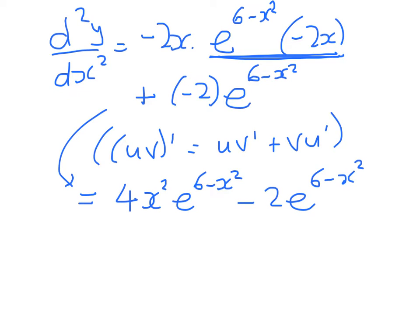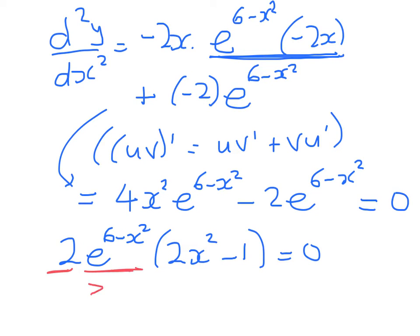Now we need to clean that up a bit. So all of that equals 4x squared e to the 6 minus x squared minus 2 e to the 6 minus x squared. Remember, our goal is to solve that equation equaling 0. We can factorize and we can take out 2 e to the 6 minus x squared times 2x squared minus 1 equals 0. Let's take a look at this. That's always strictly positive, never hit 0. So we're really just down to solving 2x squared minus 1 equals 0.